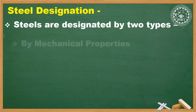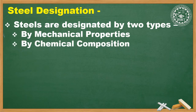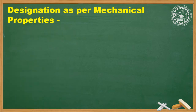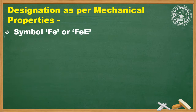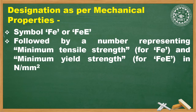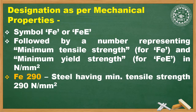Steels are designated by two types: one by mechanical properties, and the other by chemical composition. Designation as per mechanical properties is followed by a number representing minimum tensile strength in the case of Fe, and minimum yield strength in the case of Fe, in Newton per mm². For example, Fe290 designates a steel which has a minimum tensile strength of 290 N/mm².